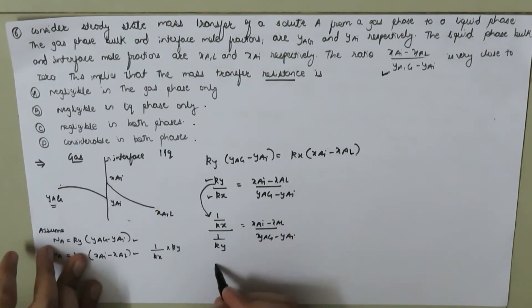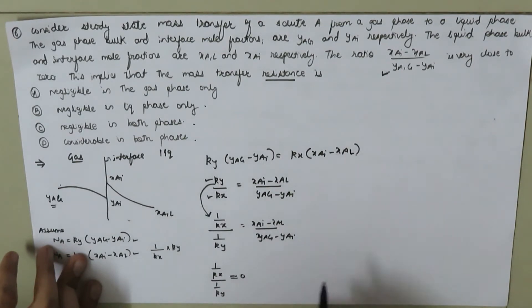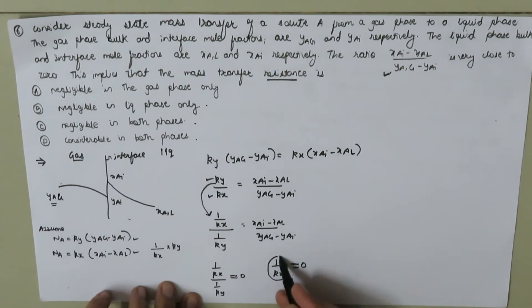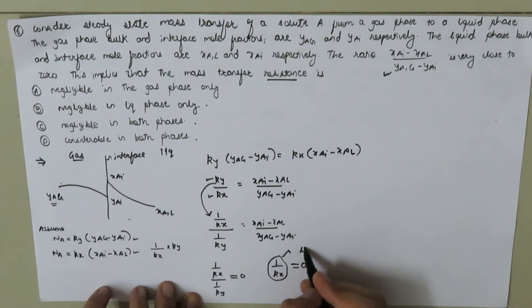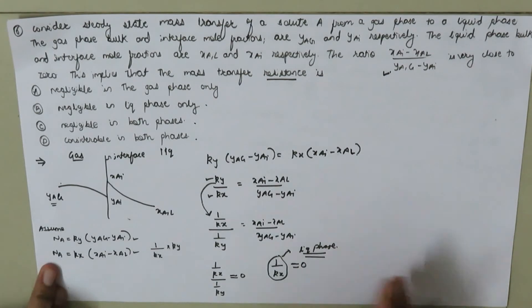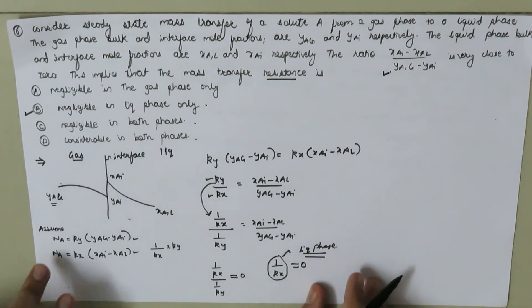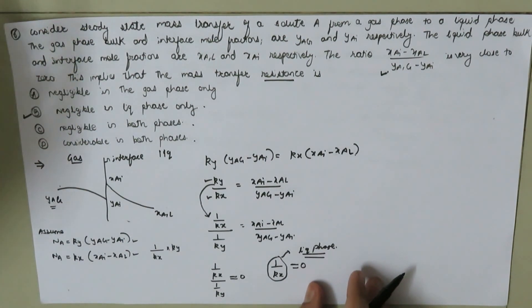The problem states this ratio is very close to zero, which means (1/K_X) / (1/K_Y) ≈ 0, indicating that 1/K_X ≈ 0. Since 1/K_X is the mass transfer resistance for the liquid phase, the resistance in the liquid phase is negligible. Therefore, the answer is that mass transfer resistance is negligible in the liquid phase only. This covers how to tackle problems based on the concept of interface mass transfer.